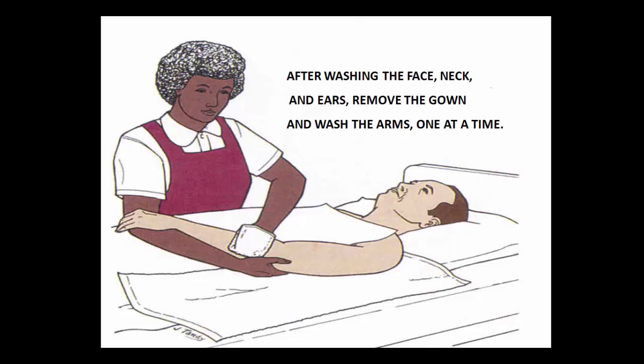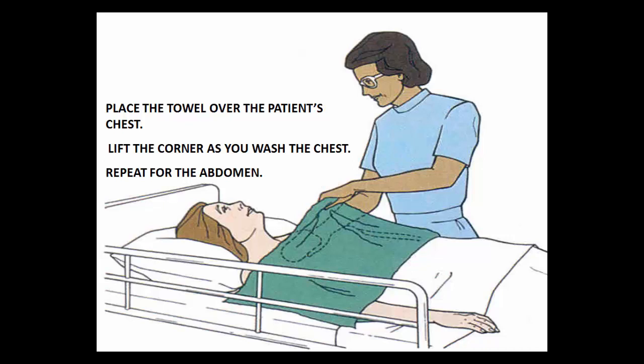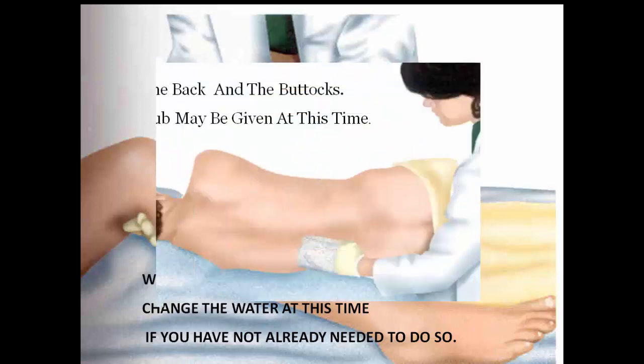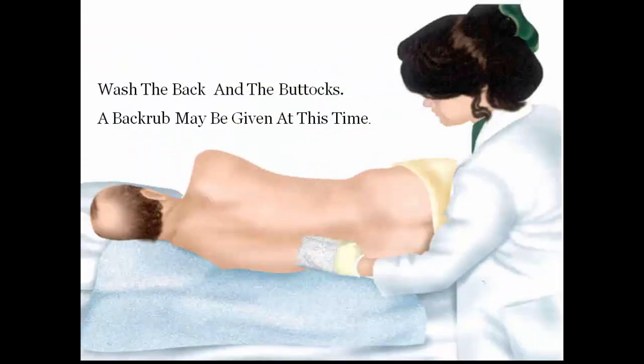After washing the face, neck, and ears, remove the gown and wash the arms. Place the towel over the patient's chest and lift the corners as you wash the chest. Repeat for the abdomen. Wash and dry one leg at a time. Change the water at this point if you have not already done so. Wash the back and the buttocks. A back rub may be given at this time.